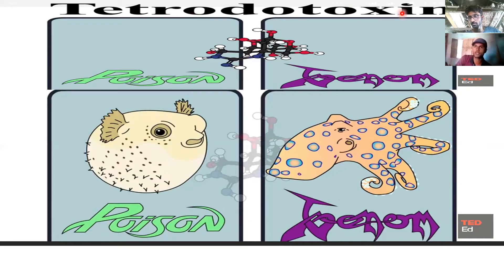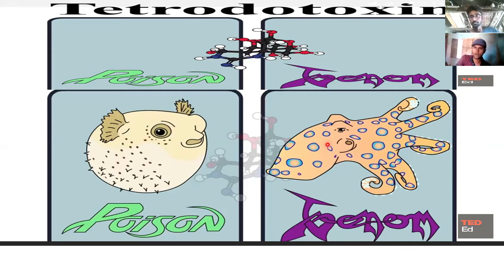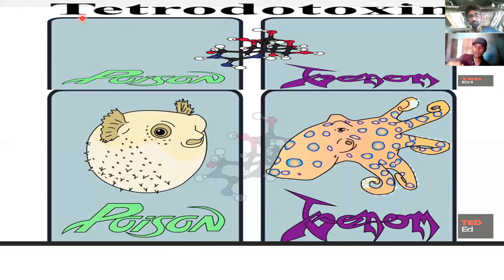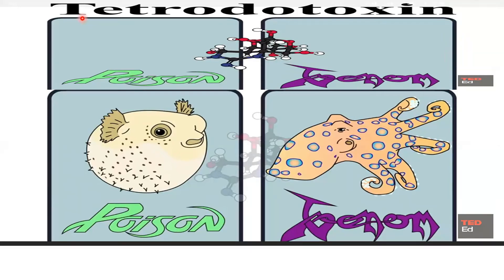This tetrodotoxin is found naturally in the puffer fish and the blue-ringed octopus. This tetrodotoxin is a thousand times more toxic than cyanide.